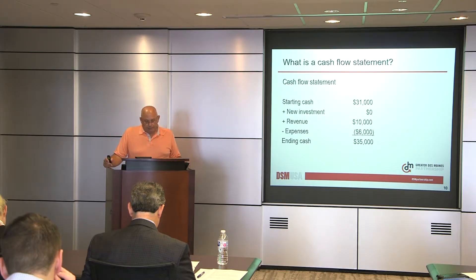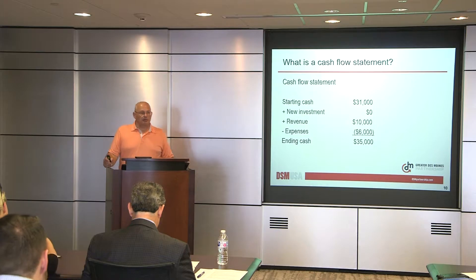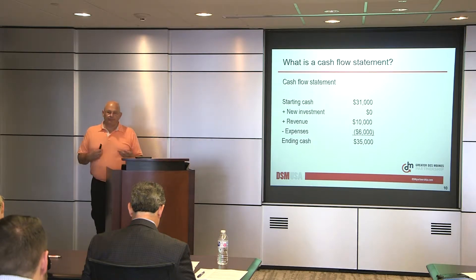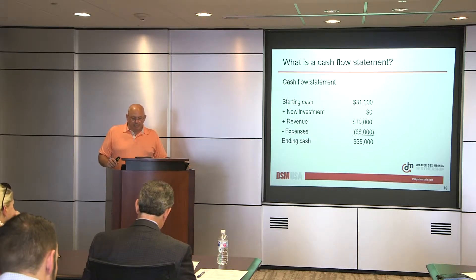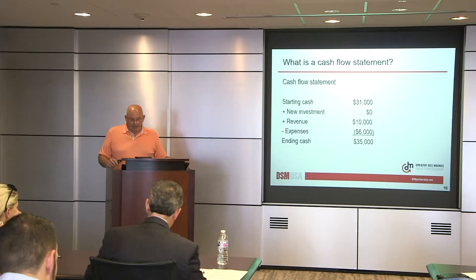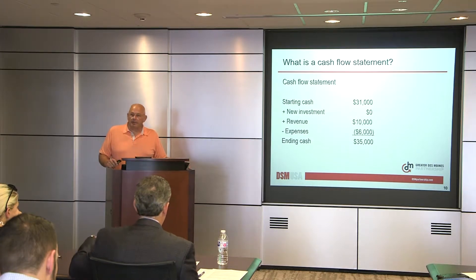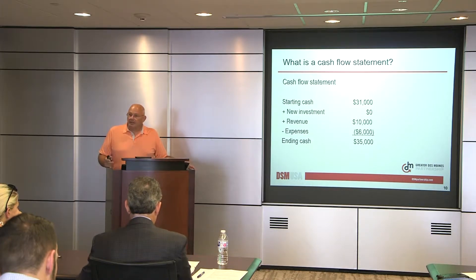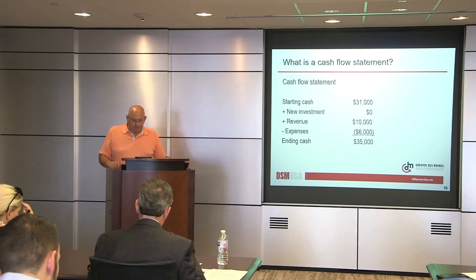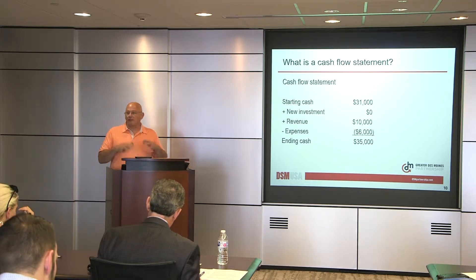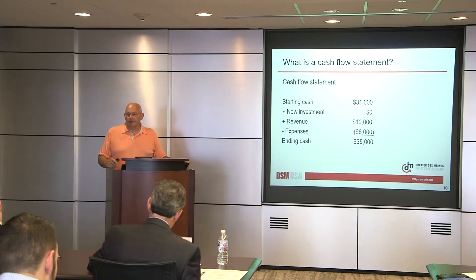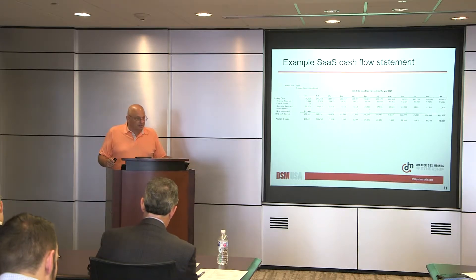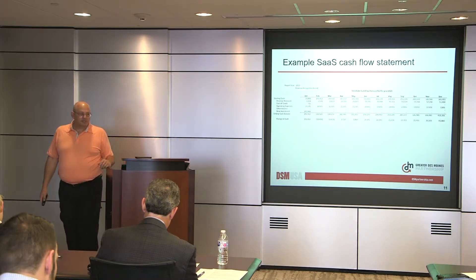A cash flow statement is pretty similar to the P&L, but what we're looking at is how much money we have in the bank. In an early stage company, this is the first and foremost thing we're looking at. Because running out of money is not a good idea. Starting cash, new investment, revenues, expenses — this includes every expense — and cash at the end of the month. Do you have more or less at the end of the month?